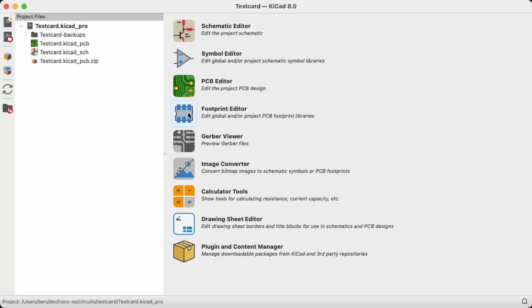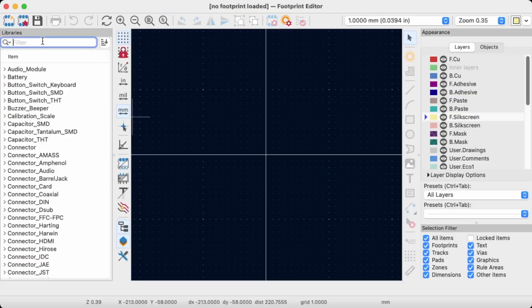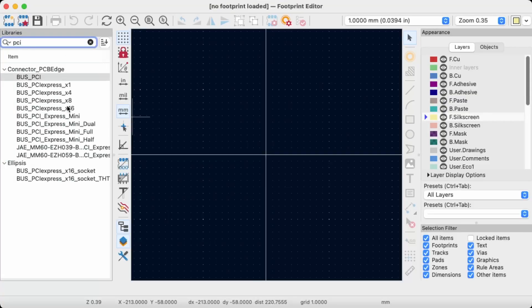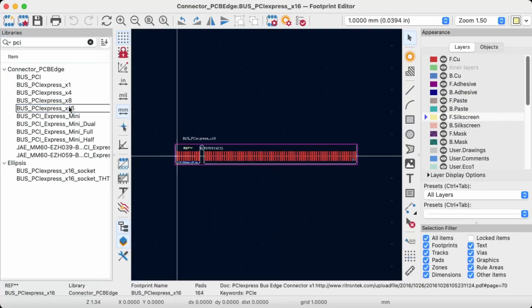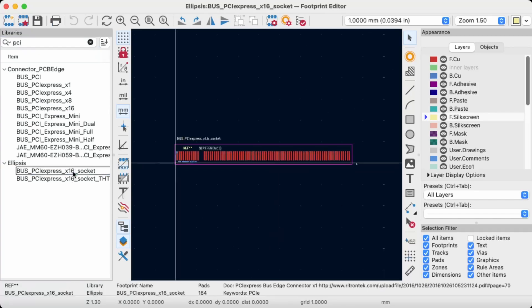KiCad already has a footprint for the card edge connector which we can see in the footprint editor. My custom PCI Express symbol can use this for the card edge, but I've had to make my own footprint for the socket. The socket footprint here is pretty similar to the card edge. It just doesn't have the slot and it's designed so that it's easy to put the card edge up against it and solder it in. Making custom symbols and footprints is pretty easy in KiCad and definitely something worth learning how to do.